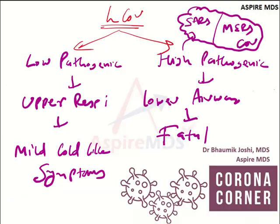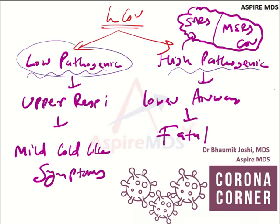One small point to remember: there are two types of human coronavirus depending on pathogenicity — low pathogenic and high pathogenic. Low pathogenic coronaviruses usually stay in the upper respiratory tract and lead to mild cold-like or flu-like symptoms. High pathogenic human coronaviruses, which cause SARS — severe acute respiratory syndrome — or MERS — Middle East respiratory syndrome — usually inhabit the lower airway and prove fatal because of their pathogenicity.